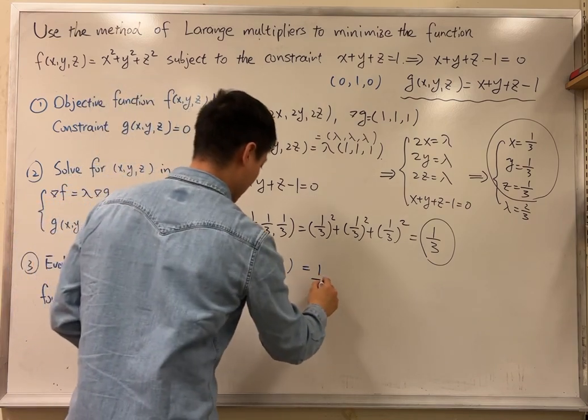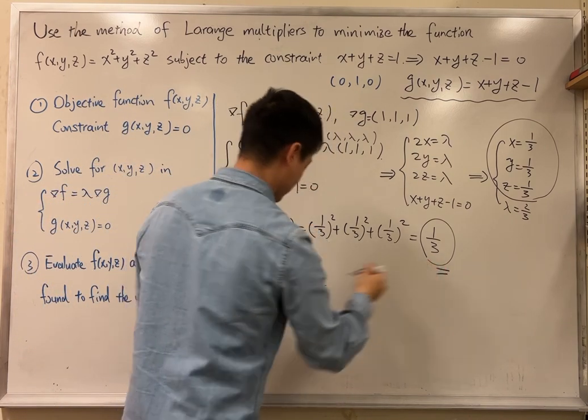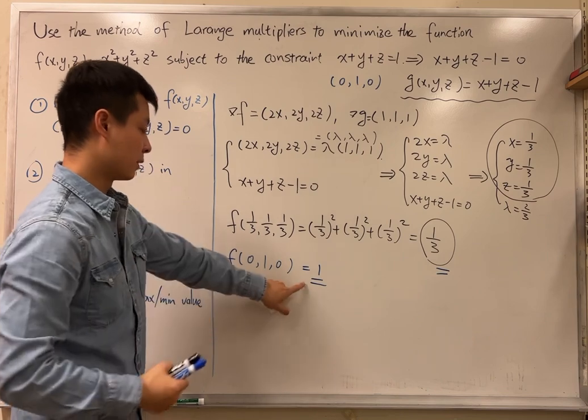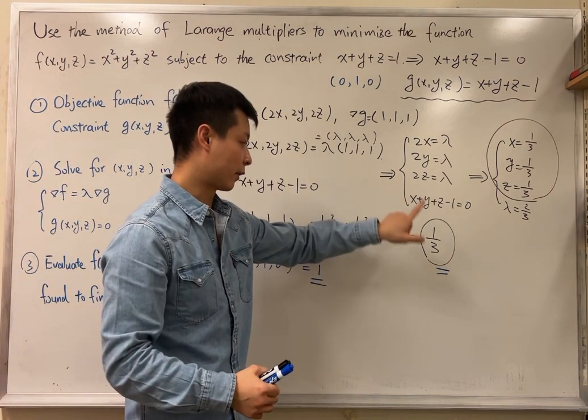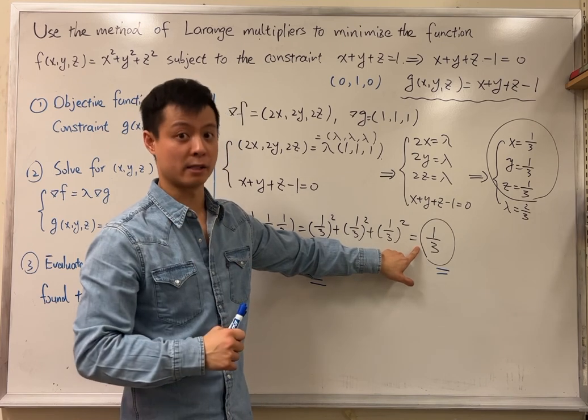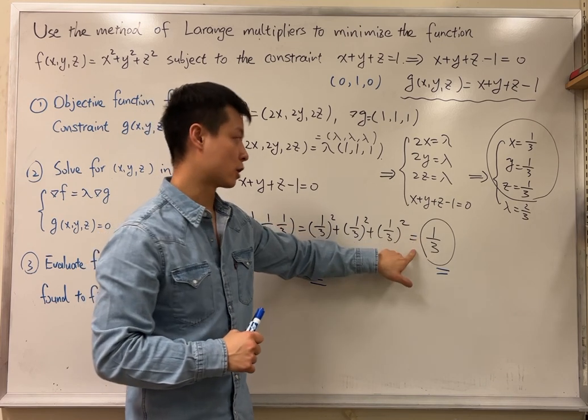So we compare this output to this output. Obviously, this output is greater than this output, which tells us that this one cannot be a maximum. So it has to be a minimum.